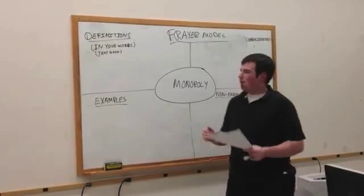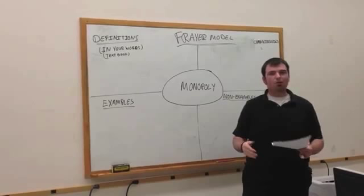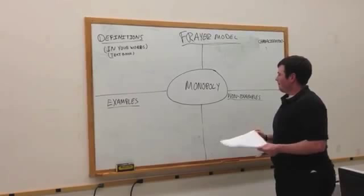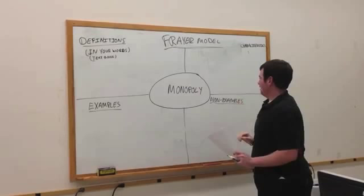So the best way to probably start off is let's just do one together as a class, and then if that goes well, I'll break you guys up into pairs and you can work on different vocab words. So for our word, on your sheet of paper write down the word Monopoly in the center.